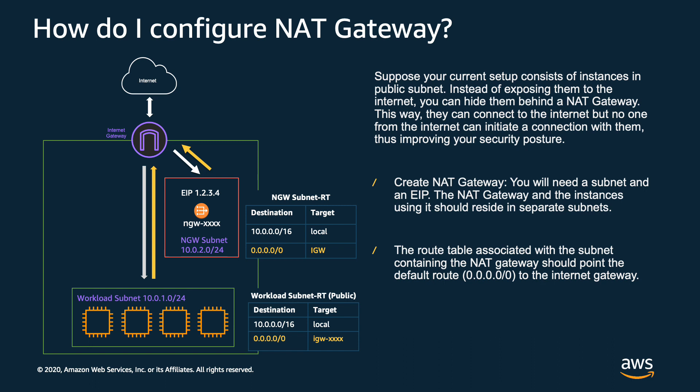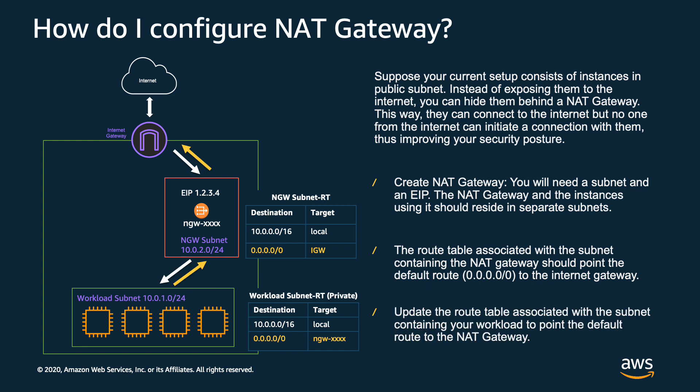This is how we allow the NAT gateway access to the internet, and the internet can then respond back to the NAT gateway. Then we would update the route table associated with our workload to point our default route to the NAT gateway. This way the path of the traffic would be initiated from your workloads through the NAT gateway out to the internet.